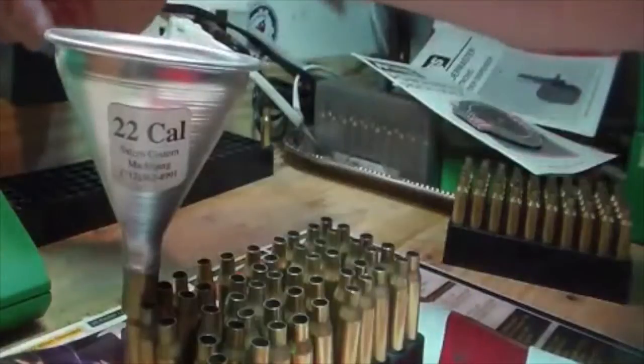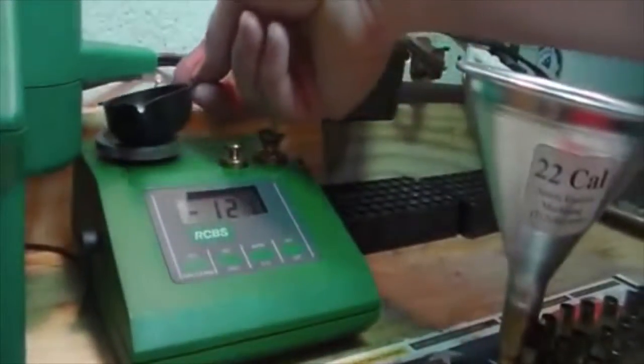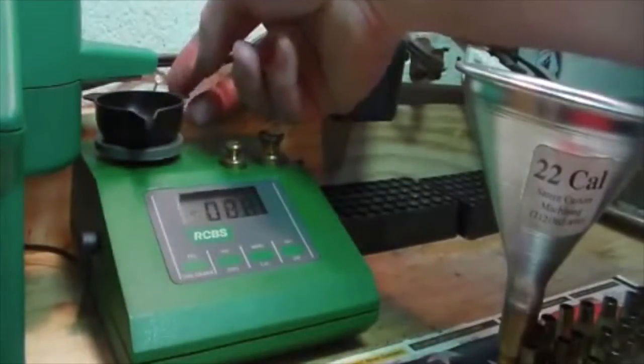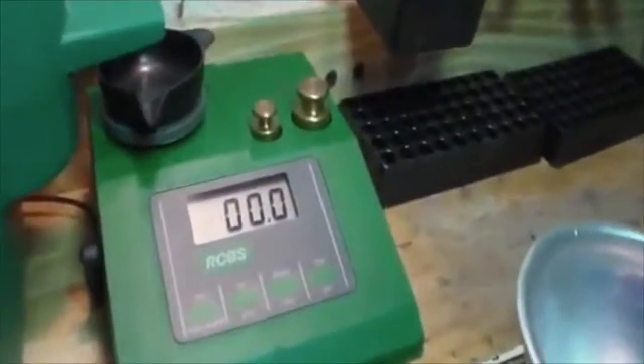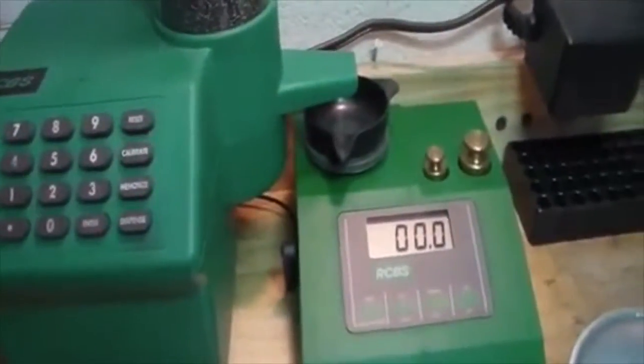So now we just take our powder here, hold our pan, throw our powder in. And we can see the scale went to negative 121. Put that scale back on there, zeroes out, and then I just repeat the process with the dispense.